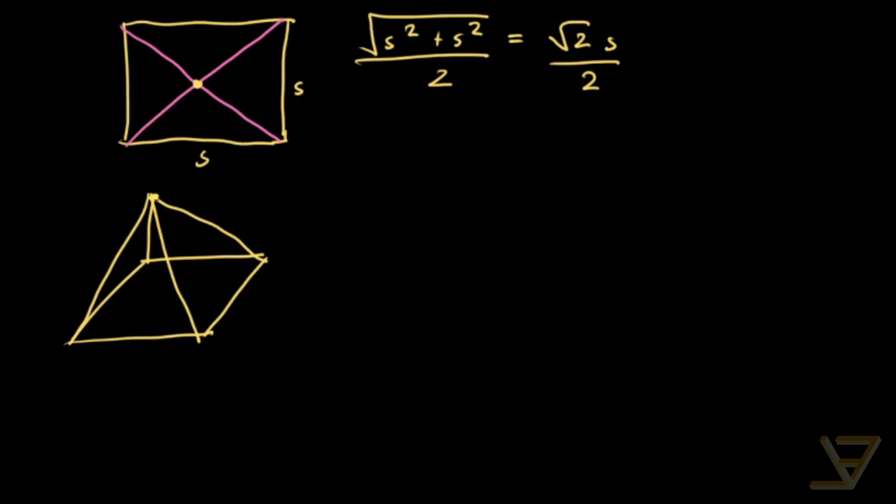And if we draw the height, which goes to the center of the square, then we can find the height by drawing half the diagonal here. So let me draw this pink triangle out.